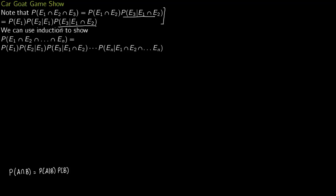You can use induction to expand this formula: probability of E1 intersection E2 intersection E3 intersection EN equals probability of E1 times probability of E2 given E1 times probability of E3 given E1 intersection E2, and so on. Now let us come to the example proper — the car goat game show.